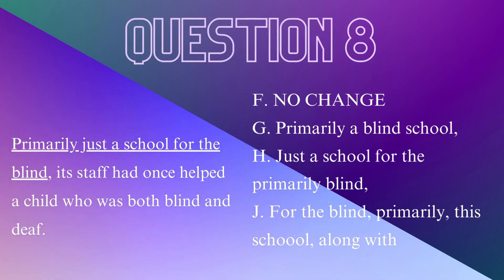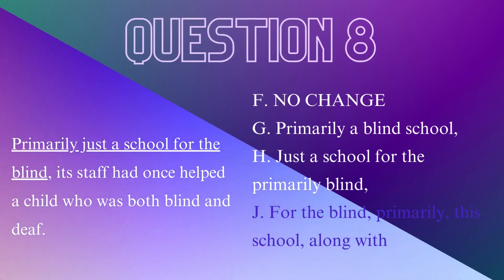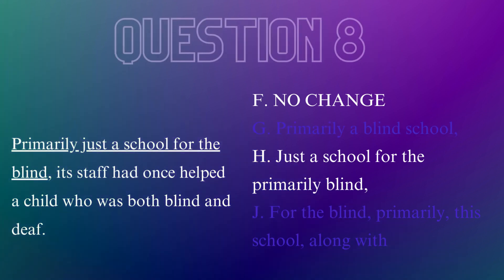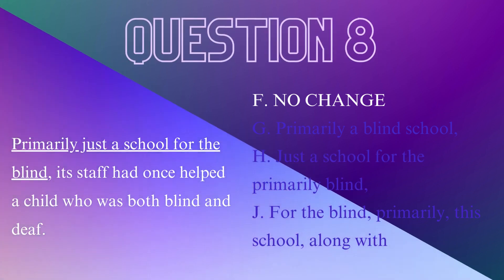Question 8. 'Primarily just a school for the blind, its staff had once helped a child who was both blind and deaf.' Try to immediately rule out the obviously incorrect choice — what choice is wordy and hard to follow? We also want to avoid misplaced modifiers. Look at G: 'primarily a blind school' makes it sound like the school is blind; we say 'school for the blind' instead. It comes down to F or H — F, no change, is more clearly written.